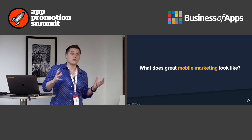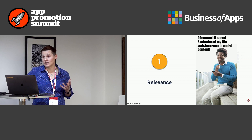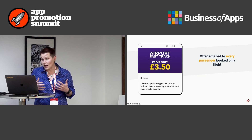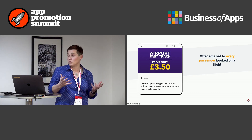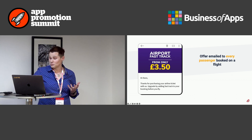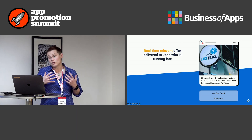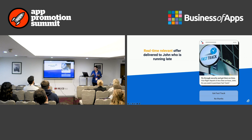Let's start with what great mobile marketing looks like. First, how relevant is your mobile marketing? A lot of people think their mobile marketing is quite relevant. For example, when you book a flight you automatically get a notification — often an email — offering fast track or speedy boarding. That might seem relevant, but if you have access to real-time data you can make it much more relevant.